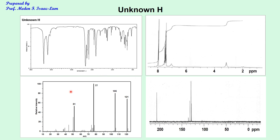The mass spectrum is a plot of intensity versus M over Z, or mass over charge. All of our data will have a charge of 1, so the M over Z is basically just the weight or the mass.